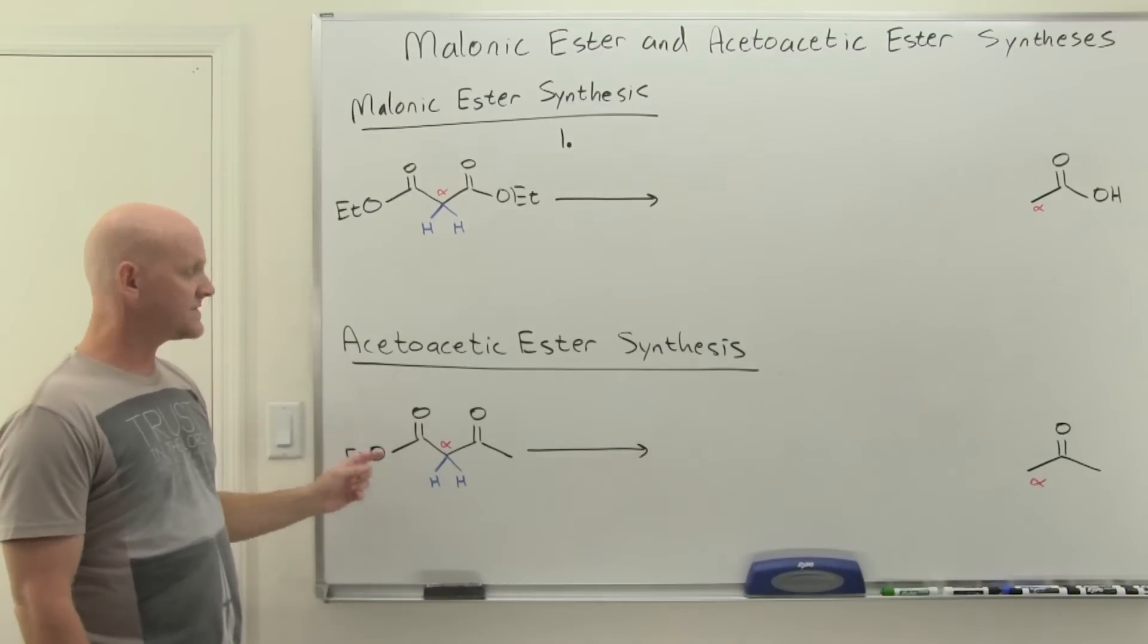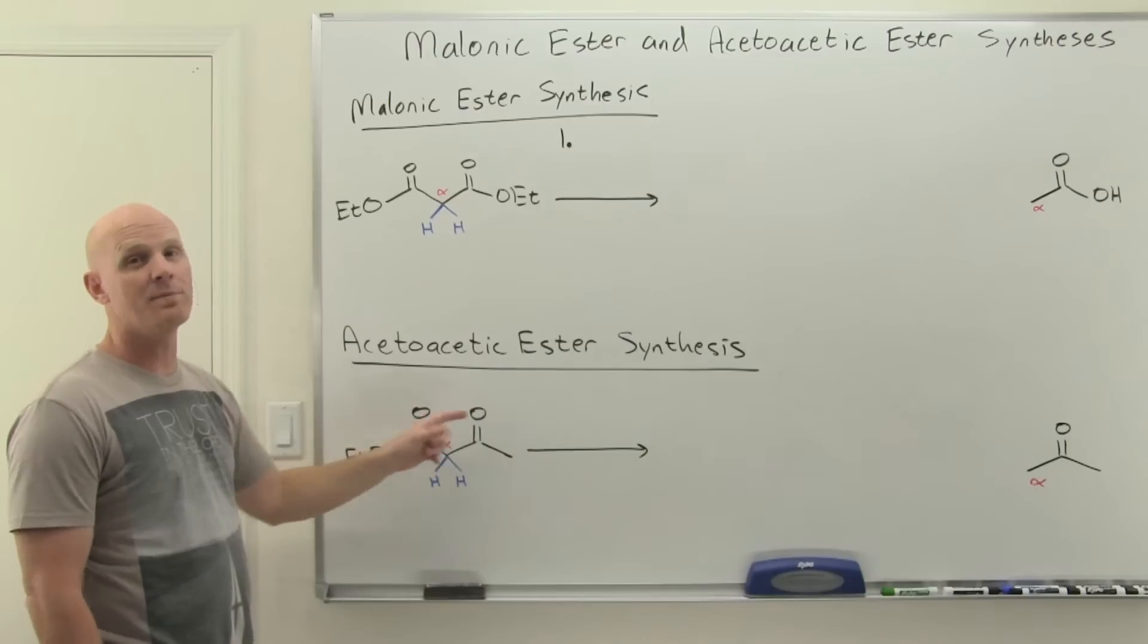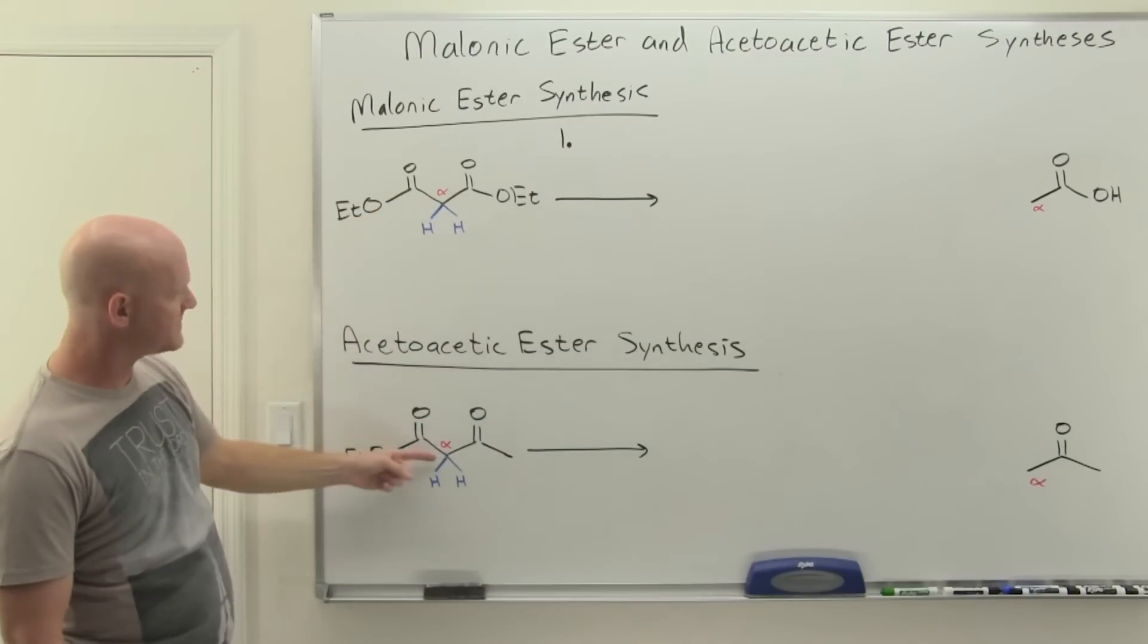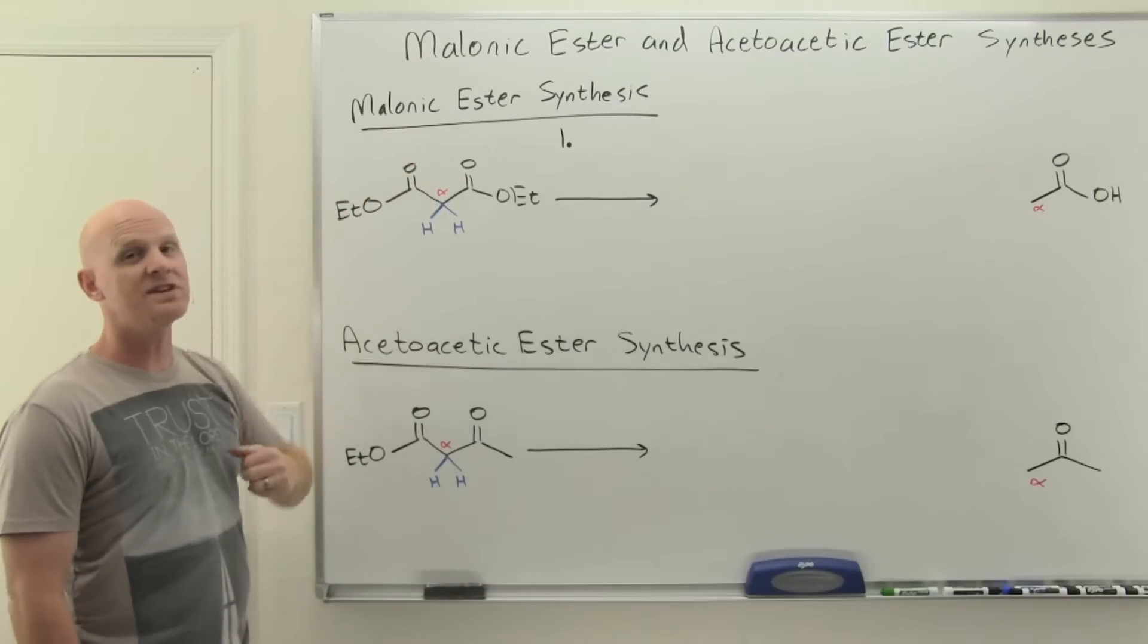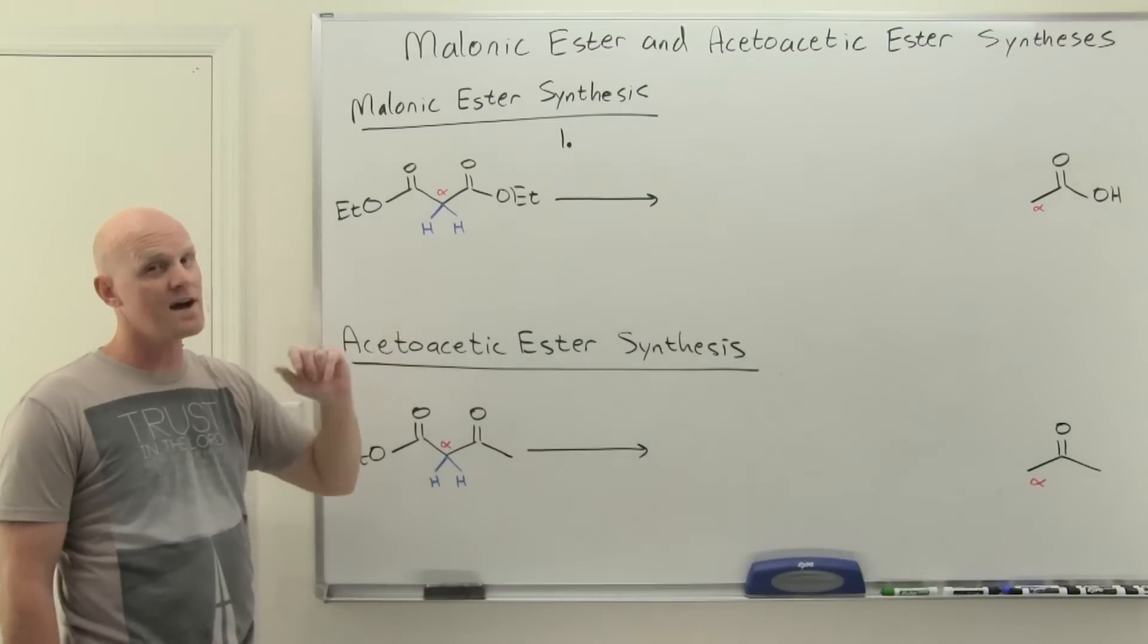Notice it's a diester and it's a beta diester. And this is acetoacetic ester right here. Notice it's not a beta diester. It is an ester, but it's also a ketone. But it is still a beta dicarbonyl and that's going to be key here. They both have an alpha carbon that's alpha to two carbonyls. And so it's going to be exceptionally acidic.